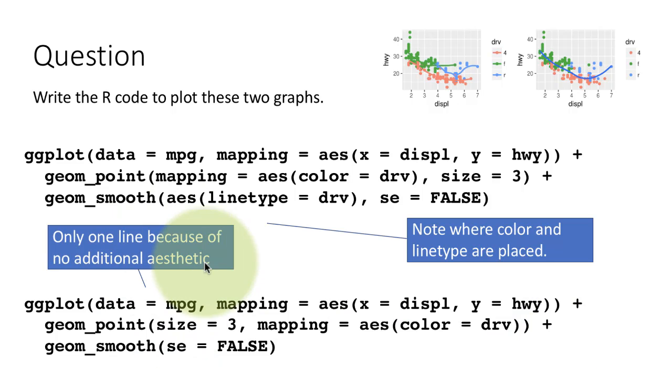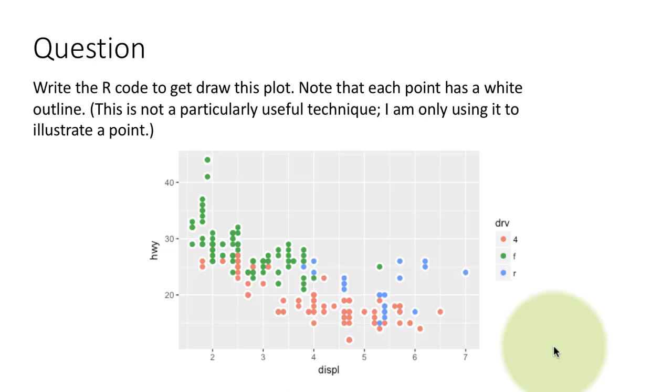Here, of course, there's only one line because there is no additional aesthetic for geom_smooth. That's what that is. This is again something not a particularly useful technique, but I just want to give you things to challenge yourself.